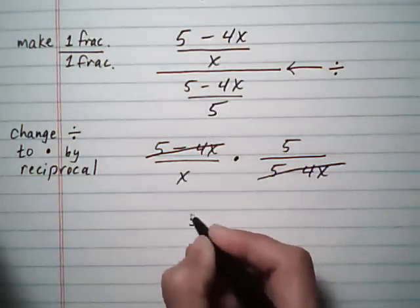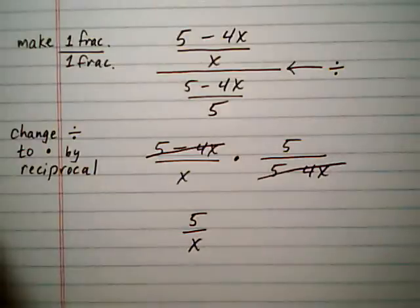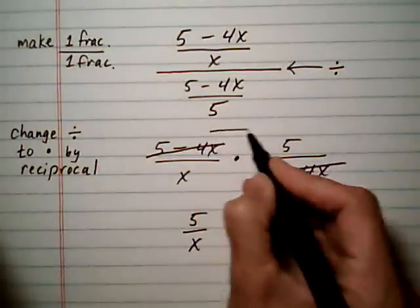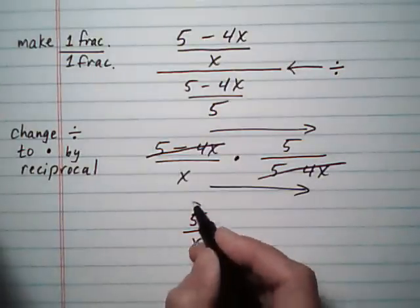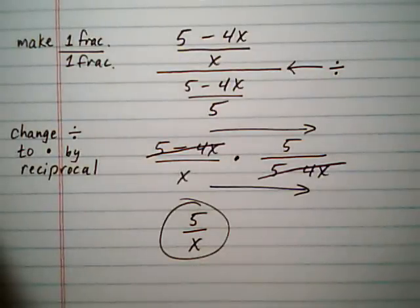That leaves us with 5 over x, because the last step in multiplying fractions after you cancel is you just multiply across the top, across the bottom, to get your new numerator and your new denominator. So 5 over x would be our final answer.